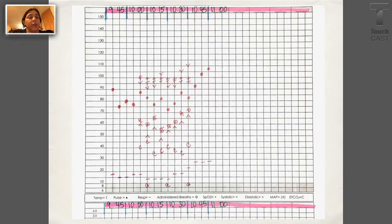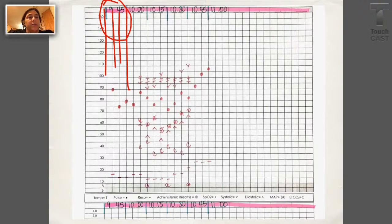So this is just a quick look at what it kind of looks like with the other part missing. So we have 945 at the top there. So if you notice, here is 945, 950, 955, 10 o'clock. So they write on those lines.